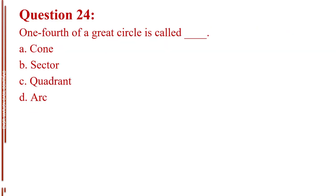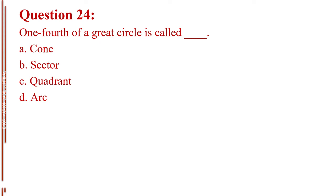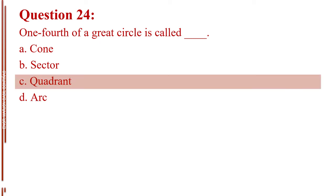Question number twenty-four. One-fourth of a great circle is called blank. Letter A, cone. Letter B, sector. Letter C, quadrant. Letter D, arc. The answer is Letter C, quadrant.